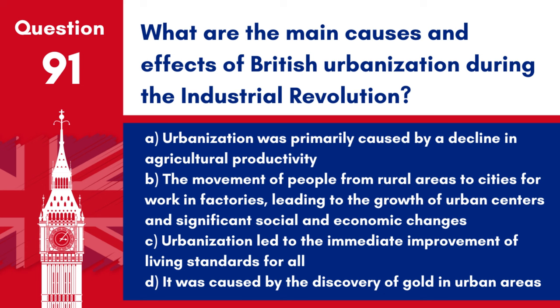Question 91: What are the main causes and effects of British urbanization during the Industrial Revolution? The movement of people from rural areas to cities for work in factories led to the growth of urban centers and significant social and economic changes. The Industrial Revolution was a key driver of urbanization, transforming the British landscape and society.